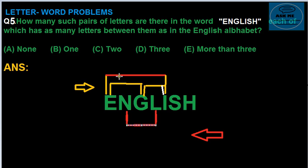There are one, two, three, four. Four pairs we get, with as many as four pairs from the alphabetical word that is English. So the answer is E: it is more than three.